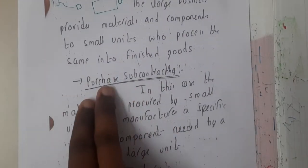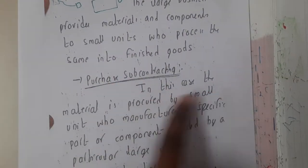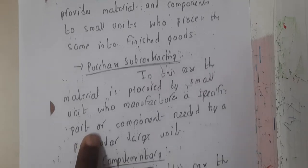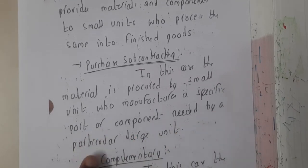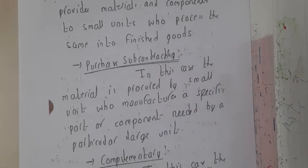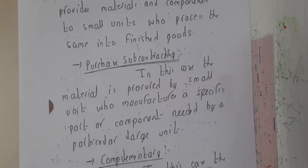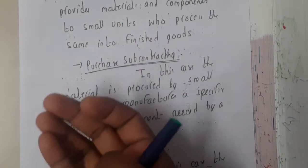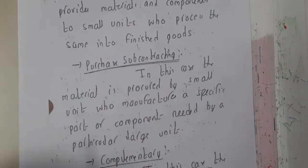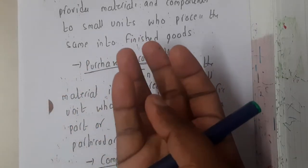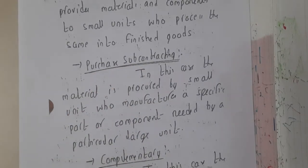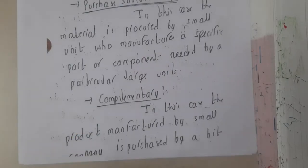Similarly, purchase subcontracting — in this case, materials are produced by small scale units who manufacture a specific part or component needed by a particular large unit. The nuts and bolts example works well here: assume you are the owner of a small company where you manufacture bolts and nuts, and your friend has a large company. Whenever he needs nuts and bolts, he comes and purchases from you. That concept is purchase subcontracting.